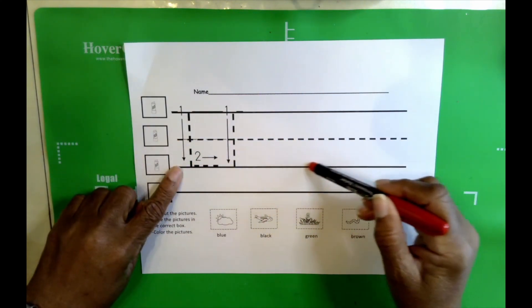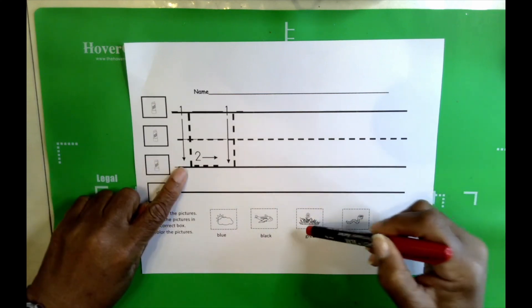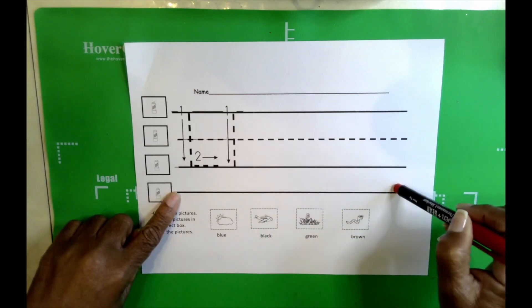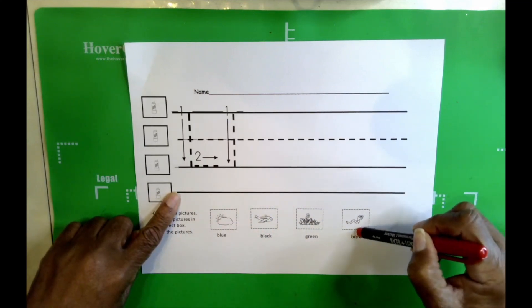The third line is called the grass line. And the very last line is called the worm line.